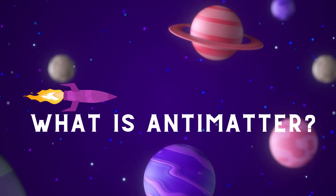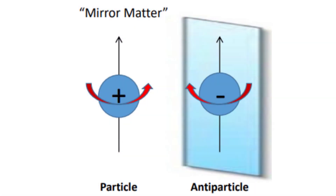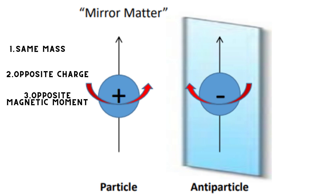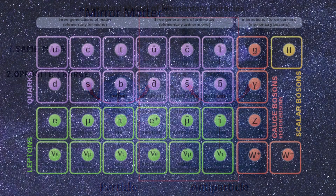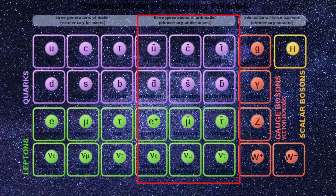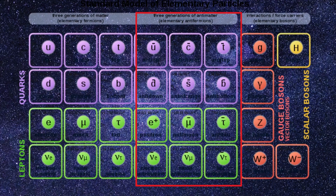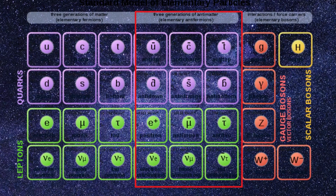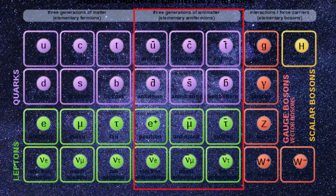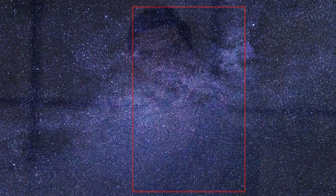So what is antimatter? Antimatter particles are like the mirrored particles of normal matter. They have the same mass, but opposite electrical charge and opposite magnetic moment compared to their mirrored particle, and every particle in the universe has an antiparticle. For example, an electron has a positron and a proton has an antiproton, and all other elementary particles have their own antiparticle in the standard model of elementary particles.